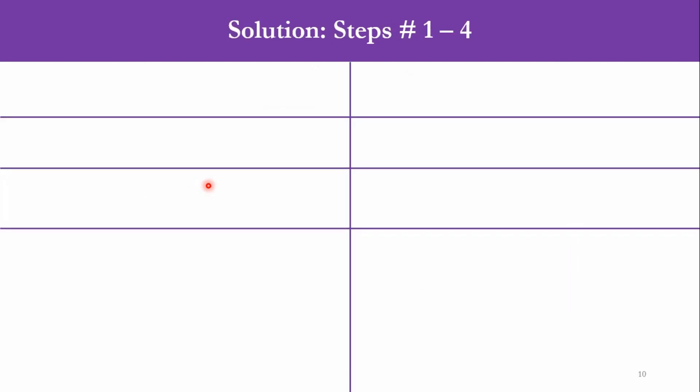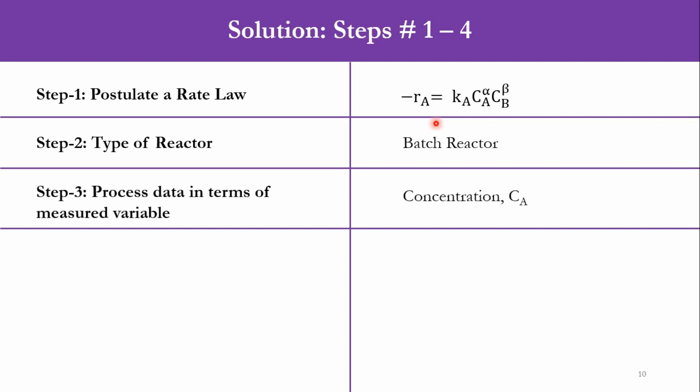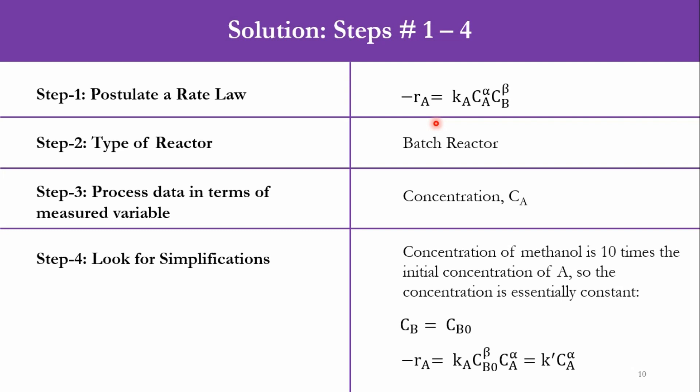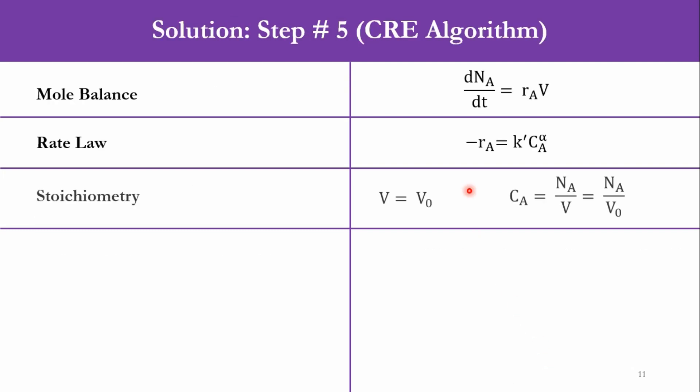We had seen that there were different steps: postulated rate law, so we have developed power law model for it because it is a homogenous system. The batch check was used. A mere variable was concentration. Then in simplification we had studied that the order of the system is first order with respect to the methanol. Also we took β=1, CB=CB0 and accordingly we took it to A', and then we applied CRE algorithm.